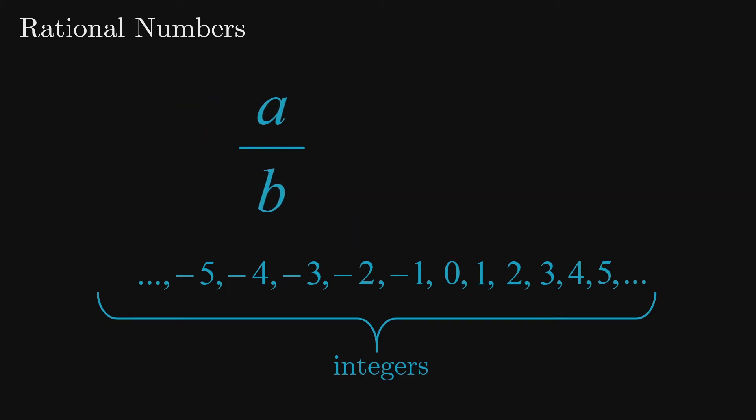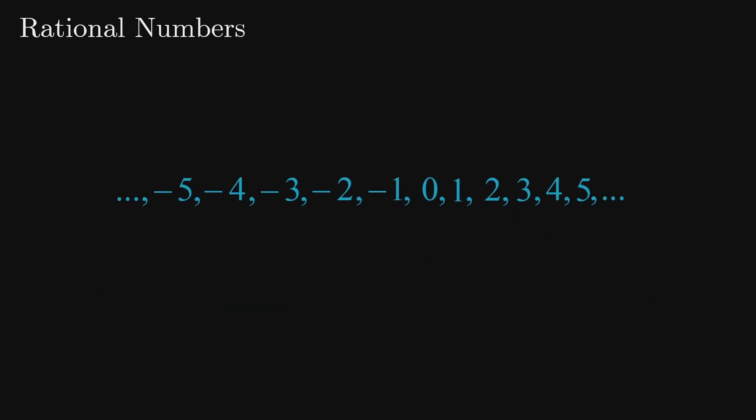The most obvious rational numbers are already written in this form. The integers themselves are rational numbers as they can easily be written as fractions with a denominator of 1.